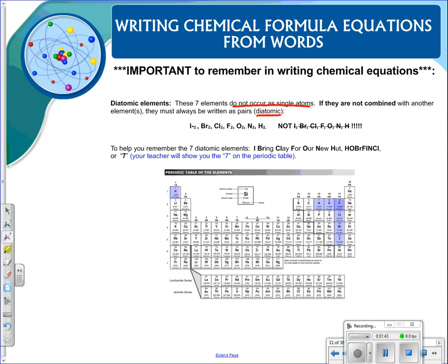So they are iodine, bromine, chlorine, fluorine, oxygen, nitrogen, and hydrogen. See that they all have little twos? This is correct. If you write them by themselves, that would be bad. It's not correct.